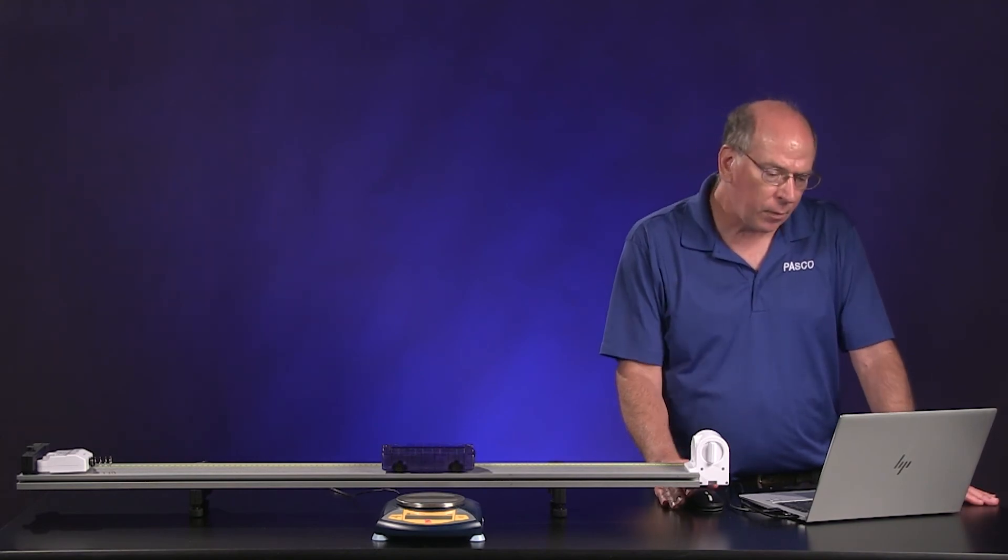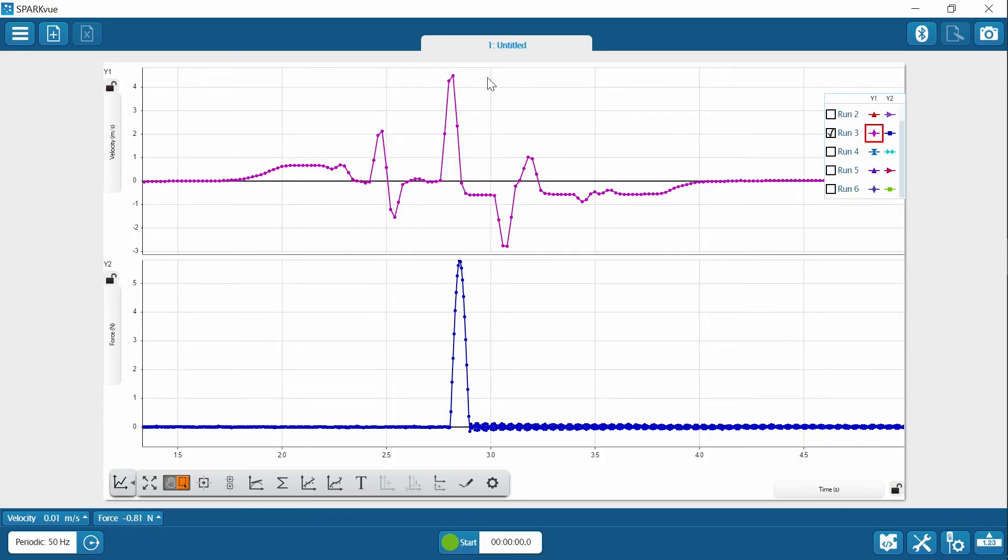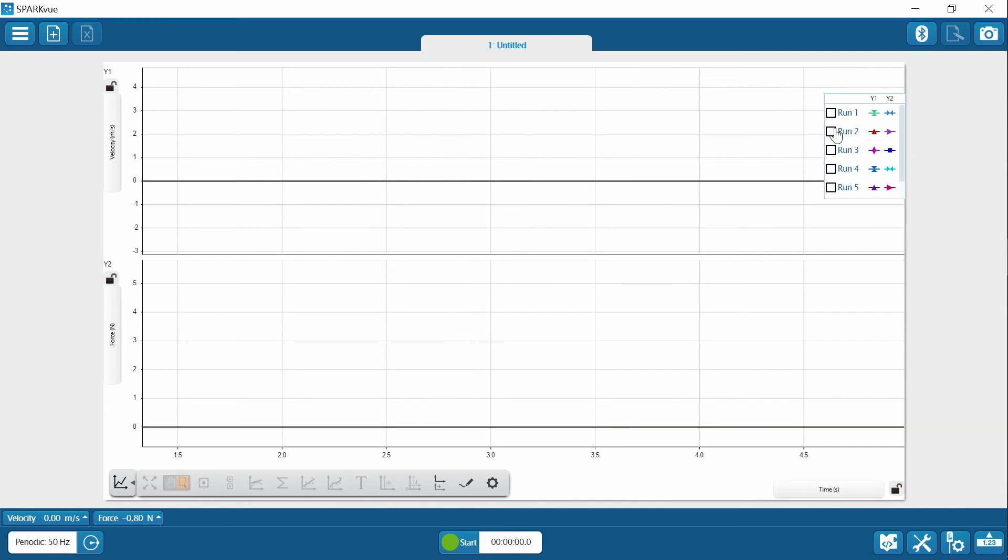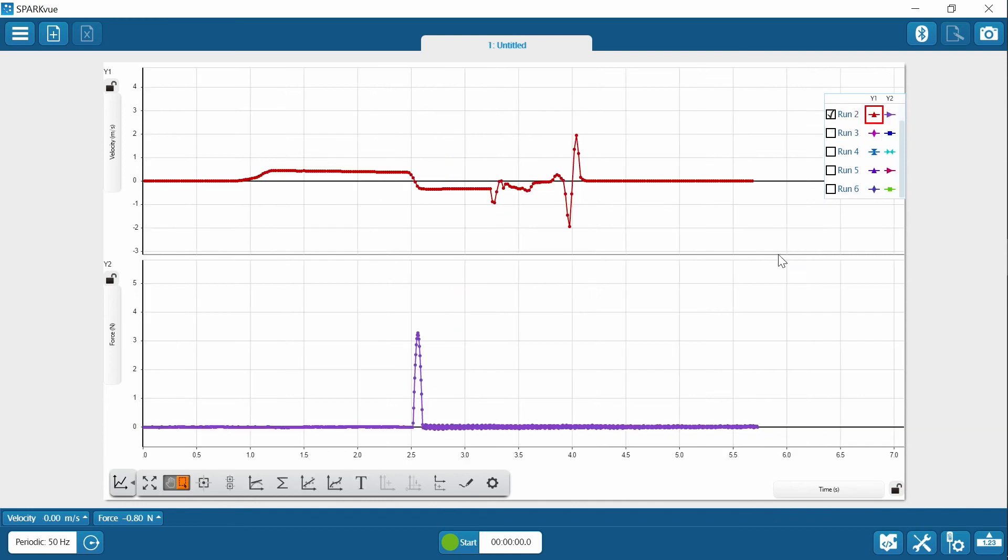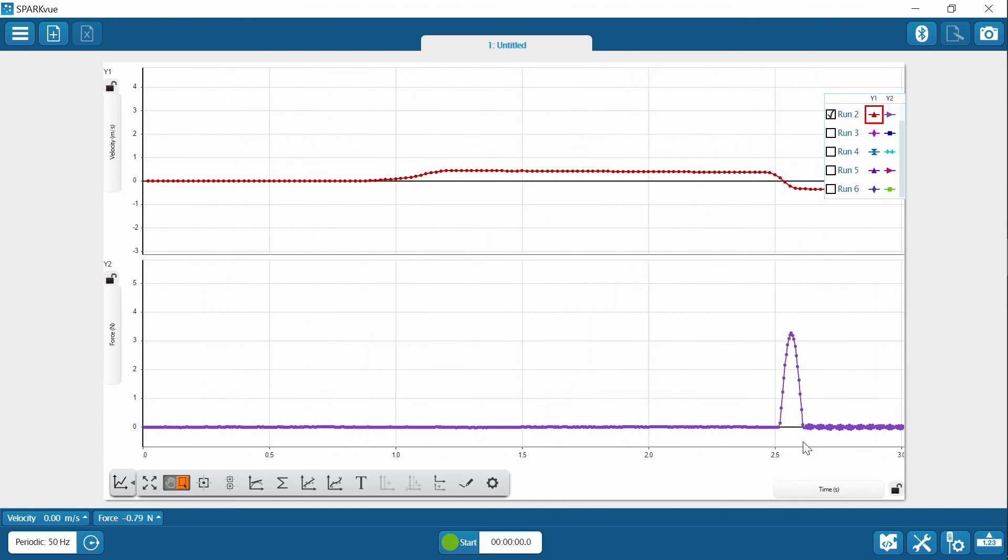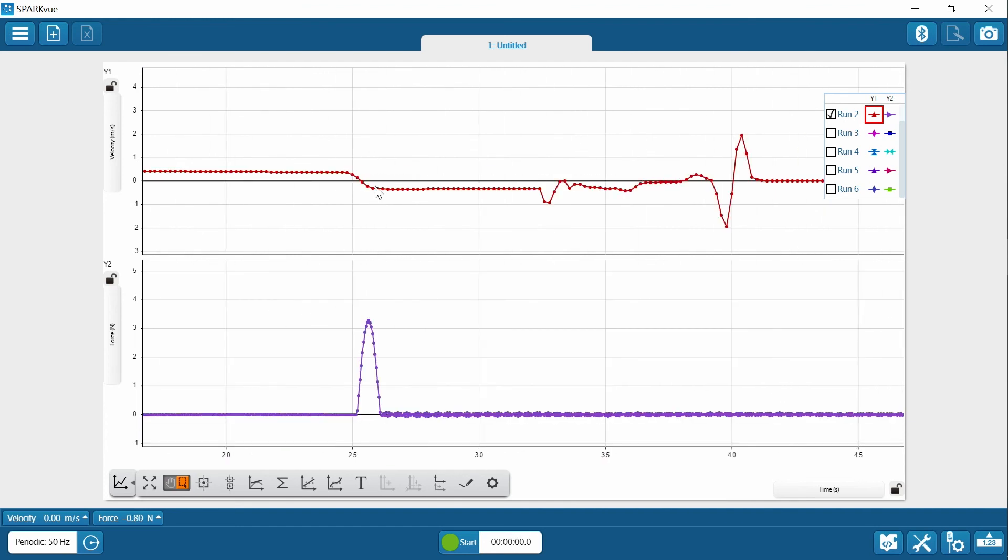We only need five trials for the lab, so you can ignore run three or we could go in and delete it. Let's check run two first before we do anything. And run two, that looks good. There's a positive velocity, negative velocity right before and after the collision.